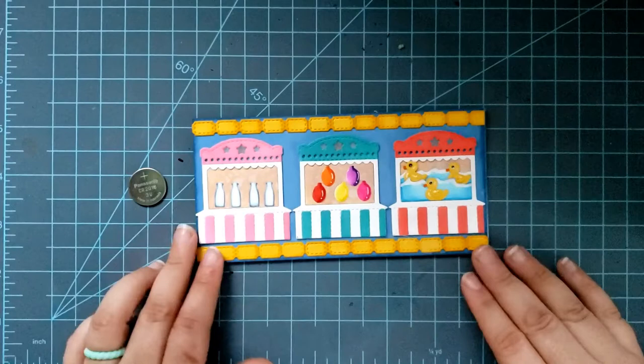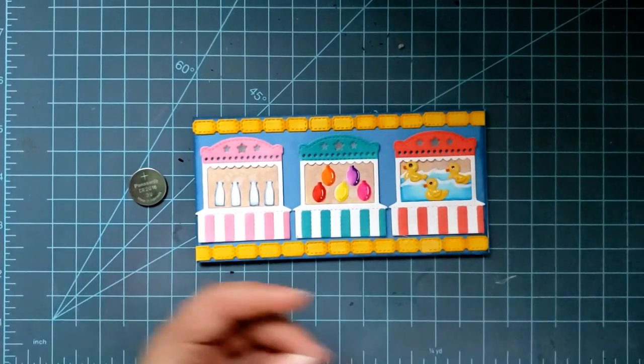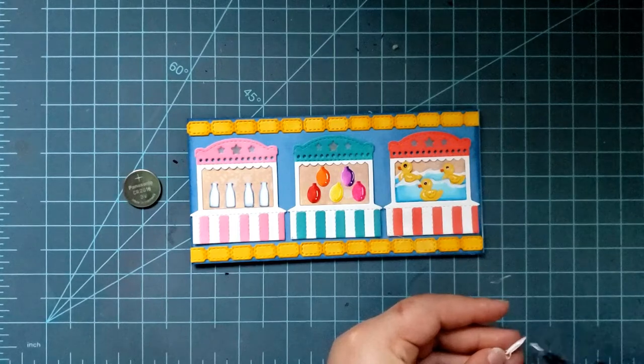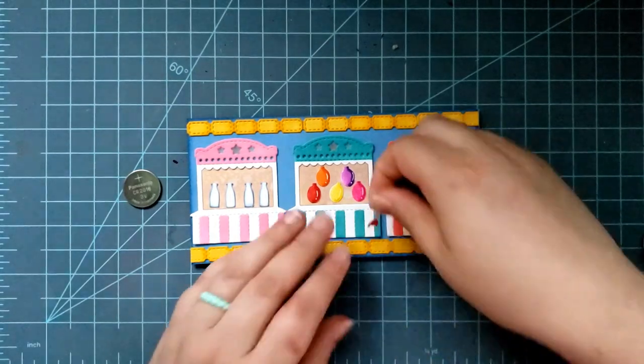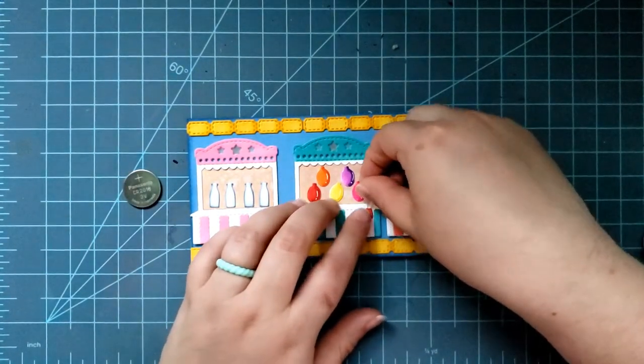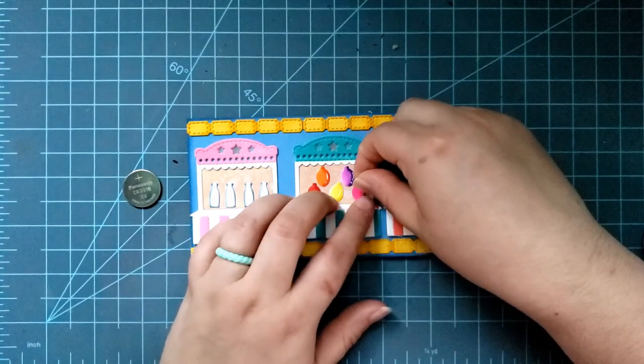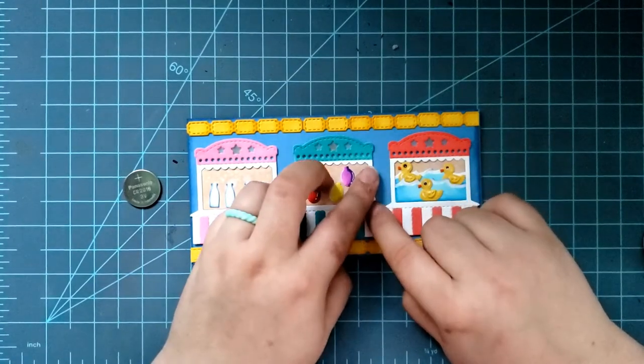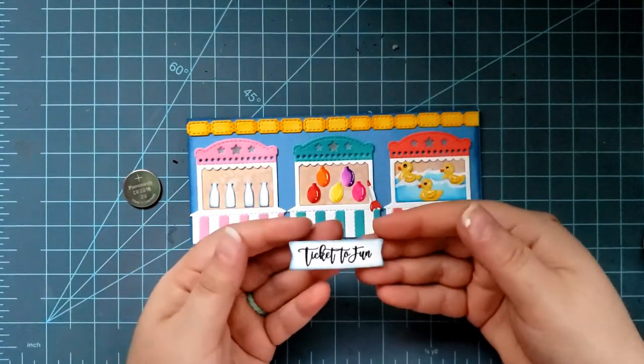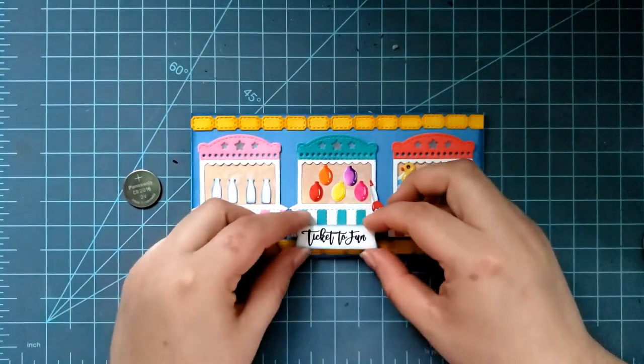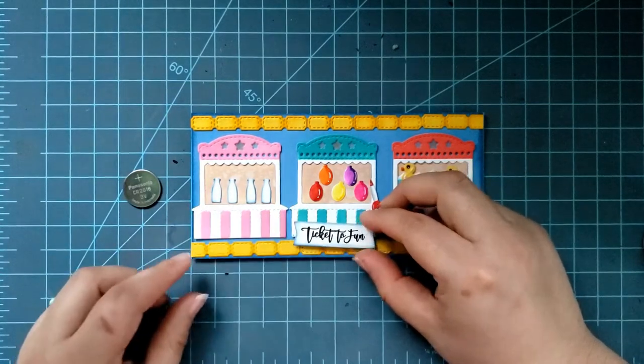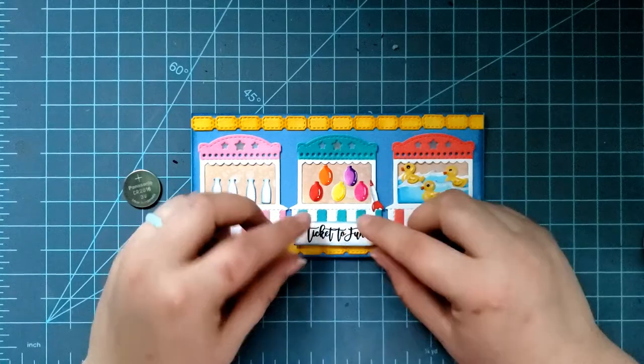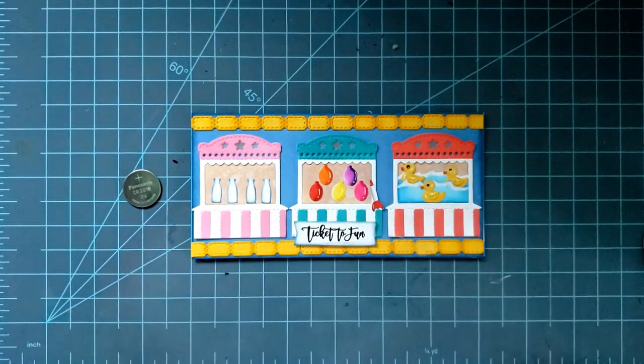The last little pieces that I'm adding, I'm adding a little dart die cut, which is also included in the kit. I'm putting that with the Popping Balloons booth. And then I'm also going to add a sentiment strip. The sentiment reads Ticket to Fun, which I thought was really cute. The sentiment stamped in pigment black ink onto a little sentiment strip that I distressed with some blue ink. I used some foam tape to tape that down.